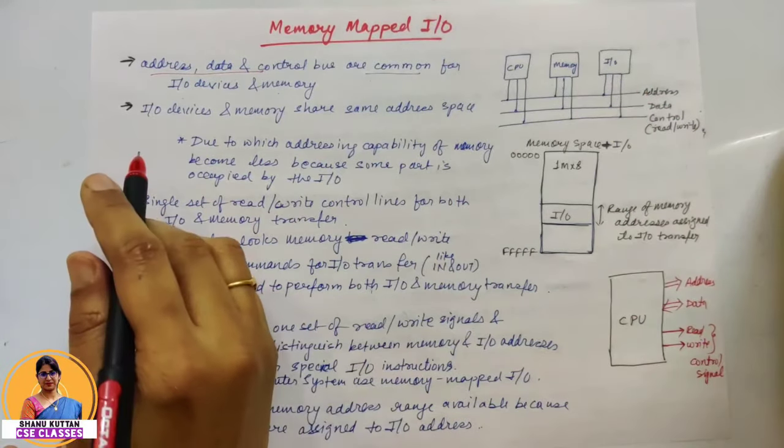That's why it reduces the memory address range available, because addresses are assigned to I/O devices. This is I/O mapped I/O and memory mapped I/O. Thank you so much for watching the video. Please like, share, comment, and subscribe to this channel if you liked the video.